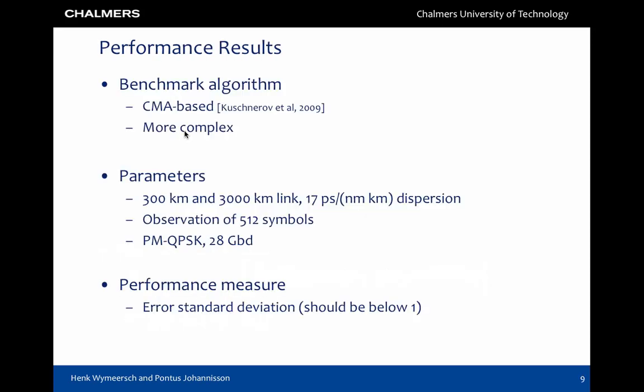To investigate the performance of this estimator, we have compared it to a standard blind CD estimator, which is loosely inspired by the constant modulus algorithm. Both estimators take as input a sequence of samples corresponding to 512 symbol slots. We have evaluated both estimators for a 300 and 3000 kilometer link, for a 100 gigabit per second communication system. The performance is measured in terms of the standard deviation of the estimates.